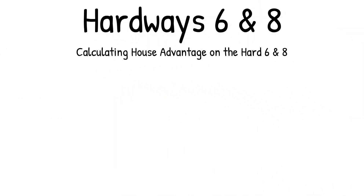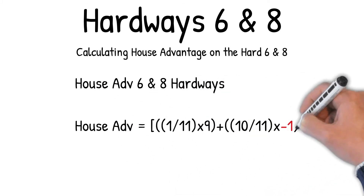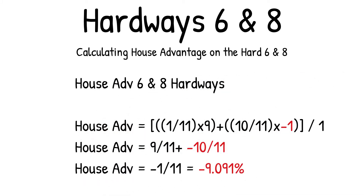Calculating house advantage on the Hard 6 and 8: house advantage equals one out of eleven times the nine dollar win, plus ten out of eleven chances to lose times minus one dollar. That adds up to nine-elevenths plus negative ten-elevenths, equals minus one-eleventh, which equals minus 9.091% house advantage.